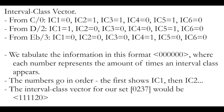We can now represent all of this information in an interval class vector. The vector is represented with angle brackets on either side and six numbers inside. Each number represents the number of times an interval class appears, and the numbers go in order of interval classes: the first number shows how many times interval class 1 appears, the second for interval class 2, the third for interval class 3, and so on. So the interval class vector for the set {0, 2, 3, 7} would be represented as: 〈1, 1, 1, 1, 2, 0〉.